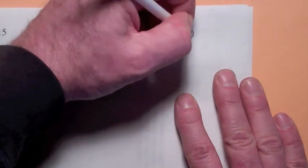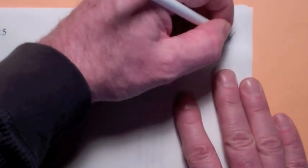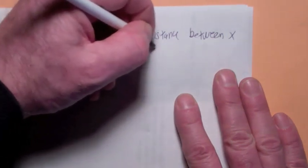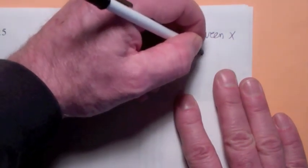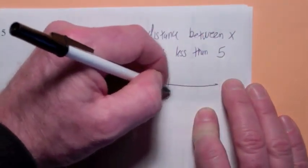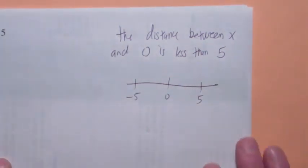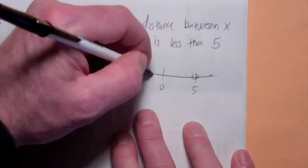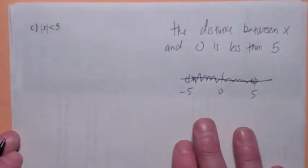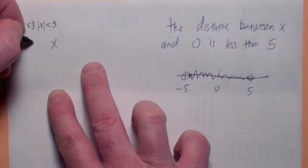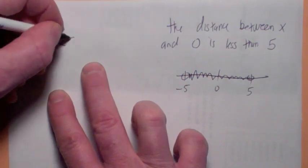So now when you talk about absolute value inequalities, what does this say? Absolute value of x is less than 5, doesn't that tell you that the distance between x and 0 is less than 5? So where could x be? If this is 0, this is 5, and this is negative 5, couldn't x be anywhere in between? So that's why the solution to this absolute value inequality is negative 5 is less than x, which is less than 5. That's the solution.